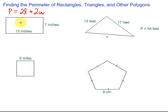Well, since it's a rectangle, we know that these two sides are the same length. So this is also 7 inches. Then, continuing our way around, the bottom is 15 inches, so this must be 15 inches as well. Now we can simply add those up. 7 plus 15 gives us 22, plus another 7 is 29, plus 15 is 44. So our perimeter of this rectangle is 44 inches.